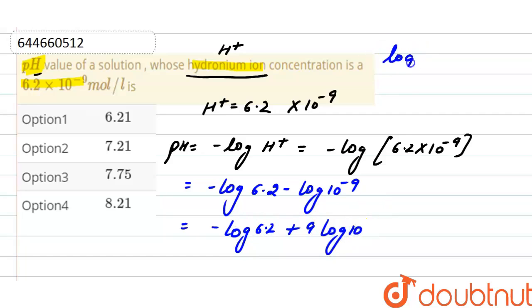The value of log 6.2 is equal to 0.79 and the value of log 10 is equal to 1.